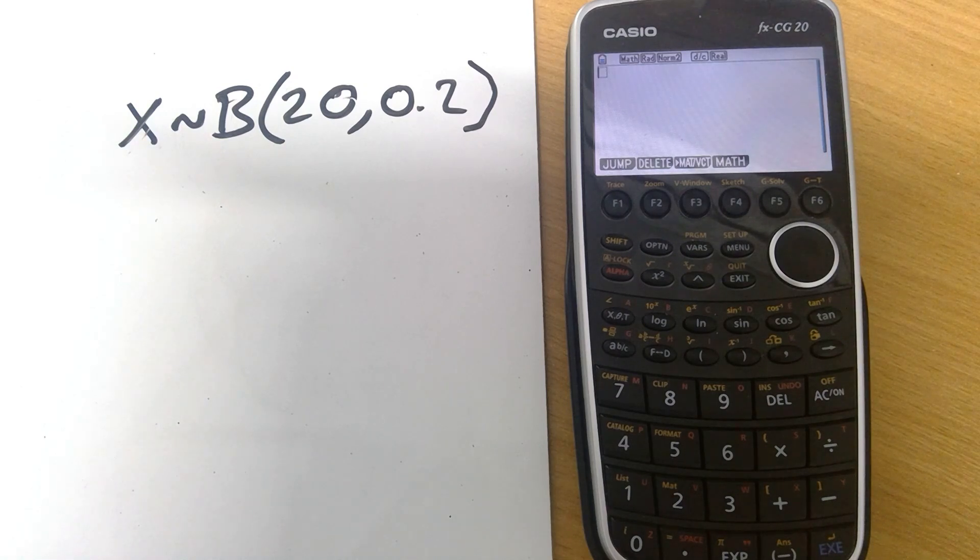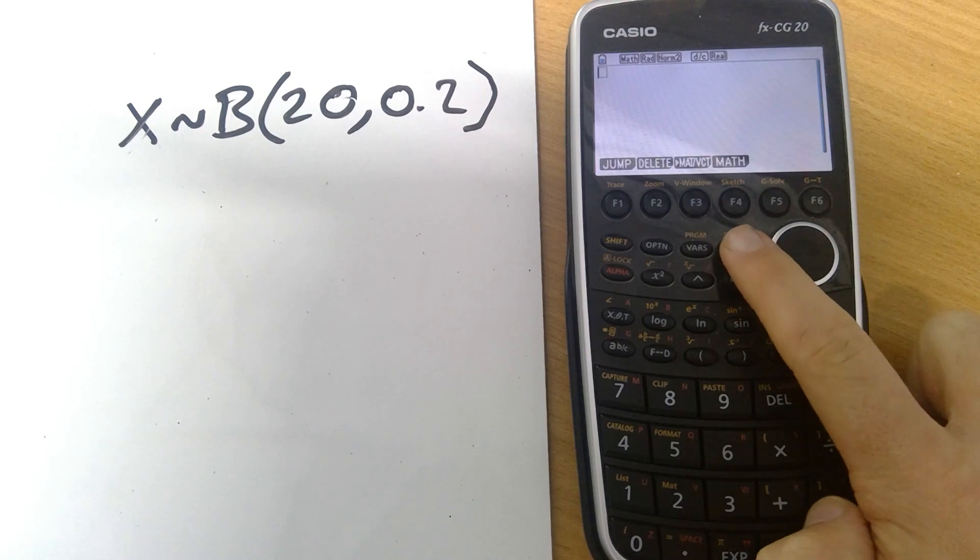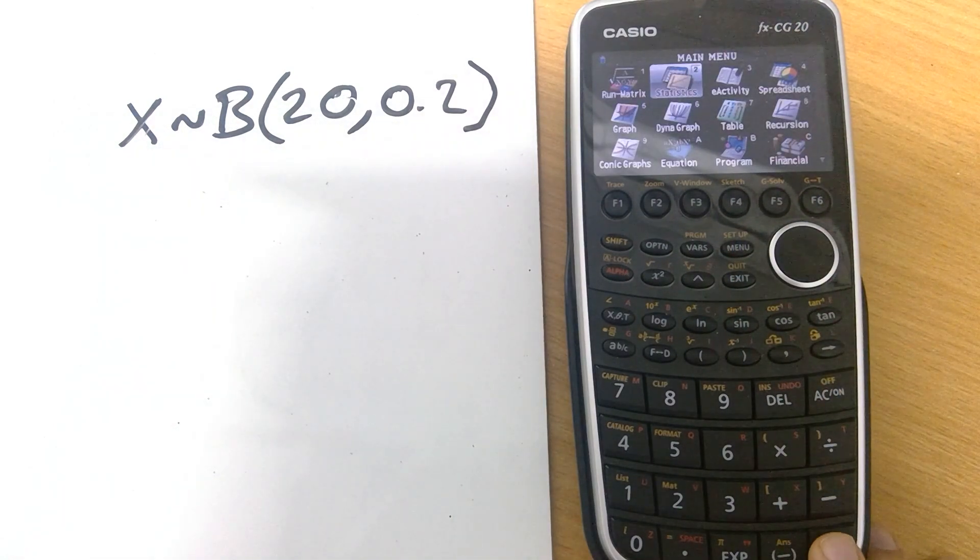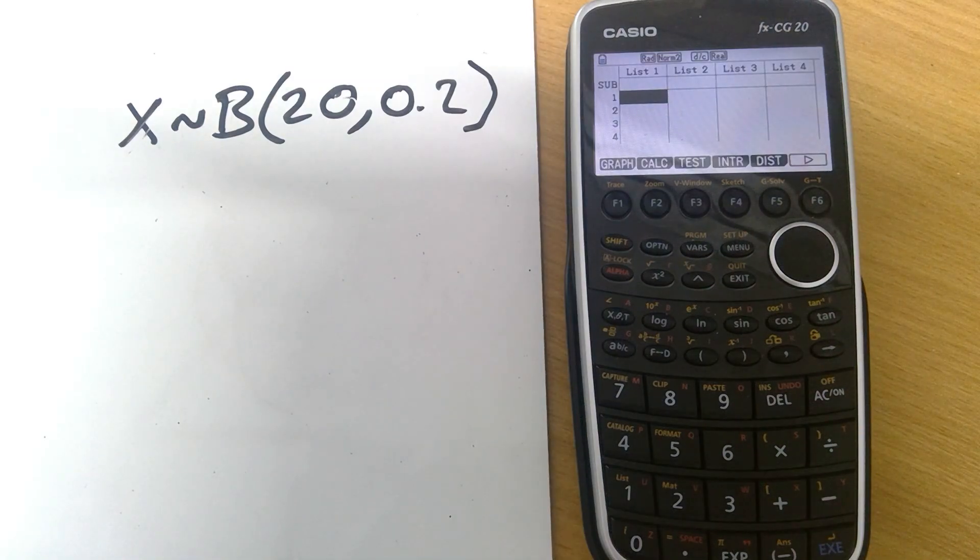So it's very simple. What we need to do first of all is go into the menu and go into the statistics mode. Simply press the menu button and then either use the arrows and execute to go into statistics or simply press 2 to take you into stats mode.